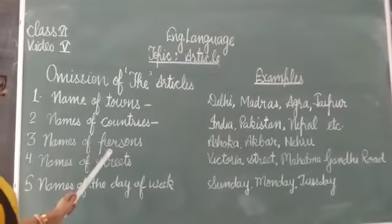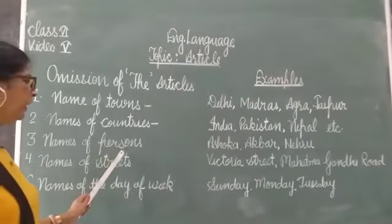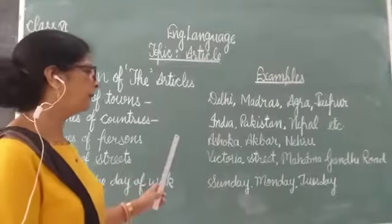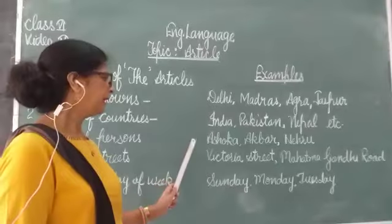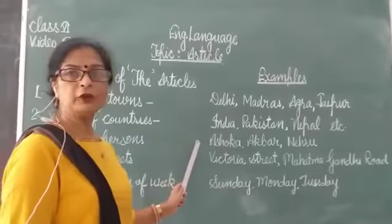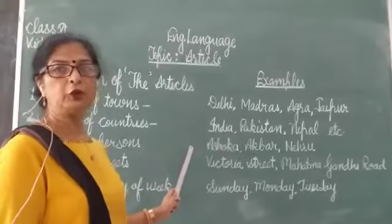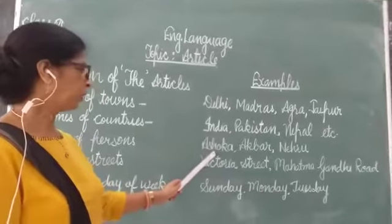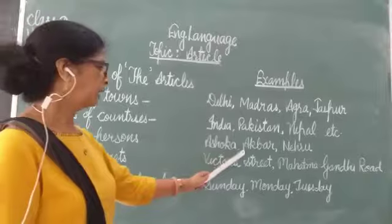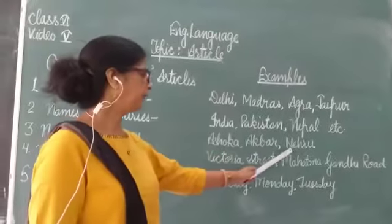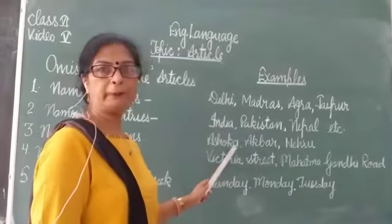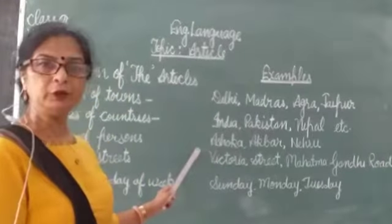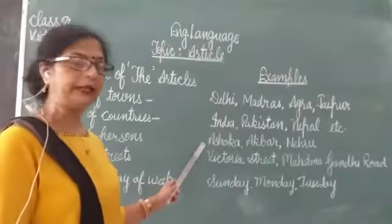Names of persons. If we are talking about the names of a person — names are already proper nouns. For example: Ashoka, Akbar, and Nehru. They are all proper nouns. With proper nouns, we will not use the article 'the'.